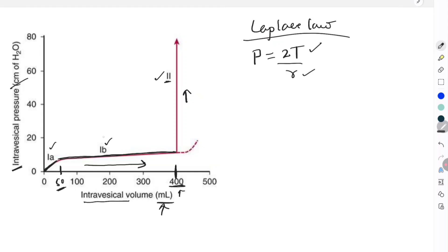What happens in the 1b part is that the tension is increasing as the bladder is filling. Along with that, there is also an increase in the radius. So when both the numerator and the denominator increase, the pressure will be constant. This is the explanation for this flat part of the cystometrogram, which is extremely important for filling of the bladder.